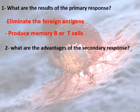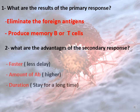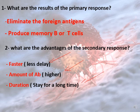The advantages of the secondary immune response are: it has a shorter latency meaning it starts faster, it produces a high amount of antibodies, and it stays effective for a longer duration of time.